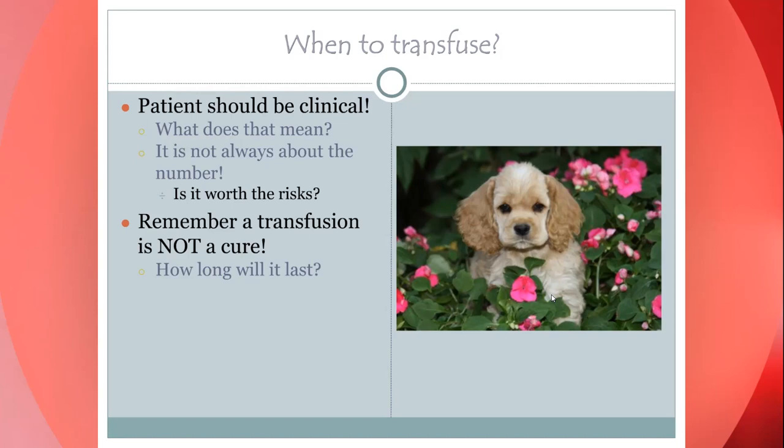Usually we'd go below 18 — even at 20 or 22 they seem to hesitate. But what if you have a cat that comes in with a PCV of 14%? Does that necessarily mean we're going to give a blood transfusion? No — you have to examine them and look at everything else systemically before you decide. It could be a renal failure cat that's been living with a PCV of 14% and doing completely fine.